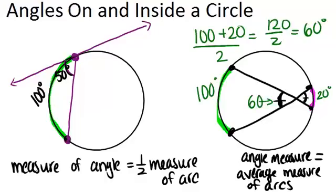So each of these angles would be 60 degrees. And remember, they both would be the same because they're vertical angles.